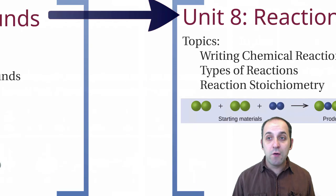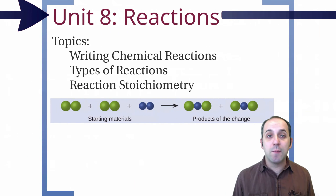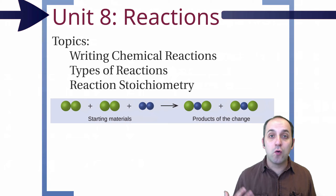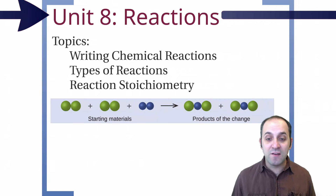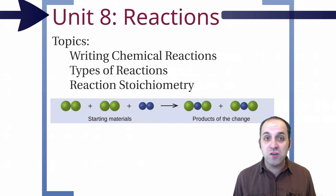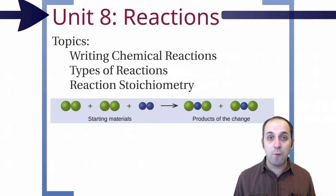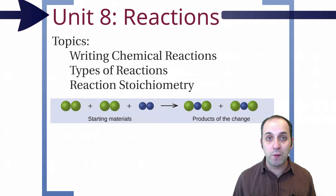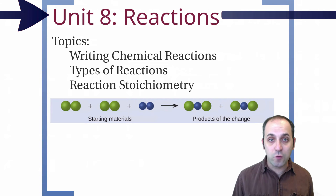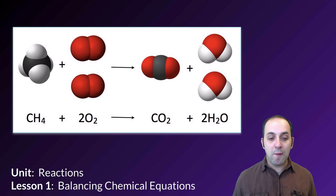Here in unit eight we're going to be dealing with chemical reactions — taking different compounds, putting them together, and seeing how they react. We'll talk about writing chemical equations, different types of reactions, and we'll revisit stoichiometry from an equation perspective.